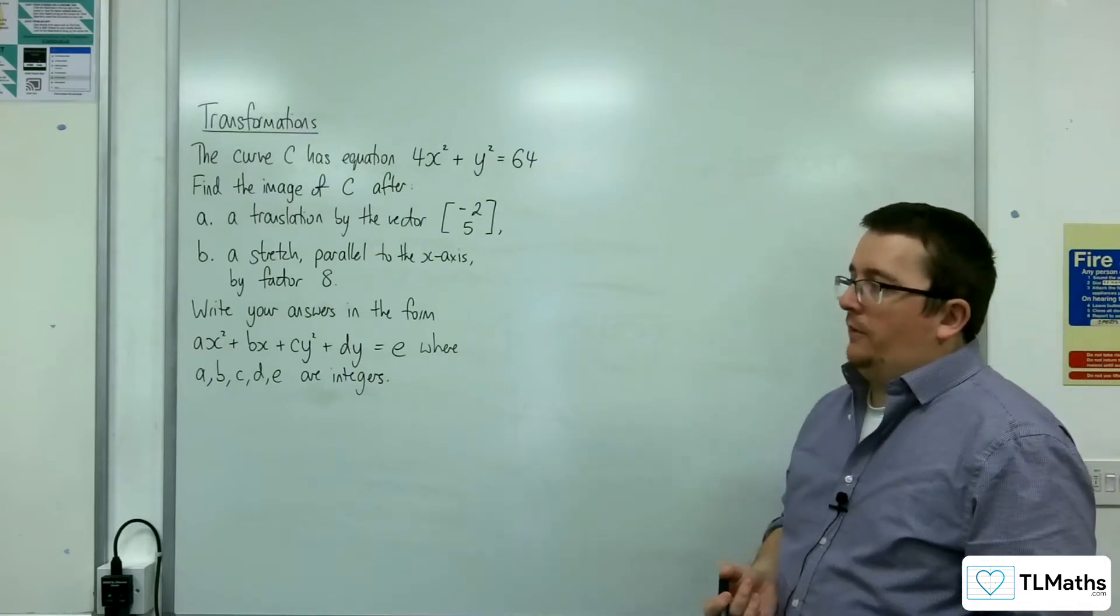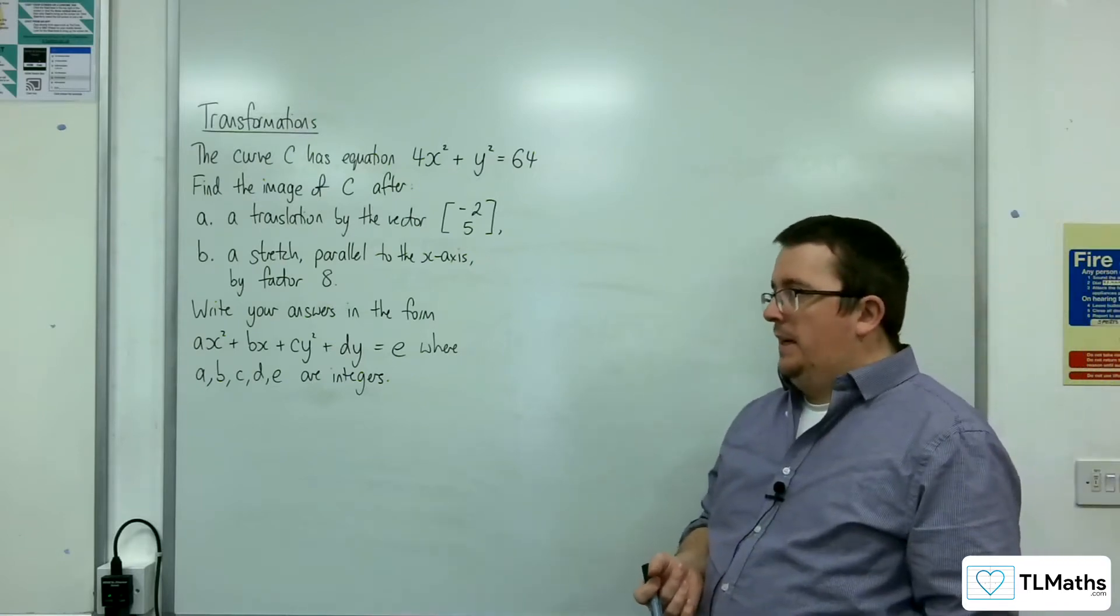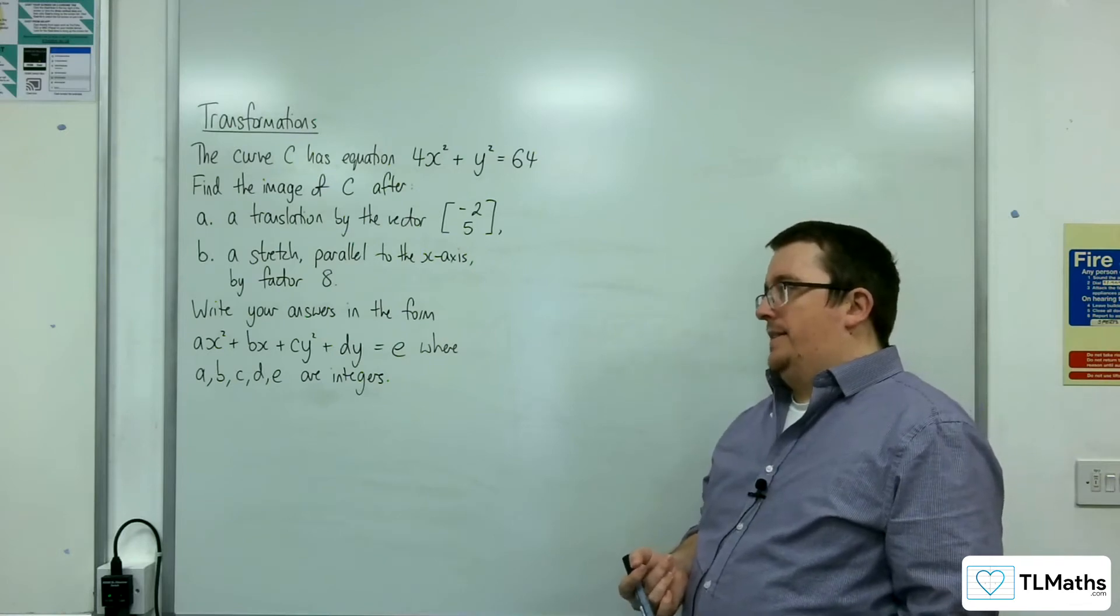Write your answers in the form ax squared plus bx plus cy squared plus dy equals e, where a, b, c, d, and e are integers.